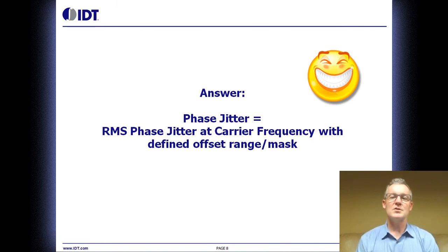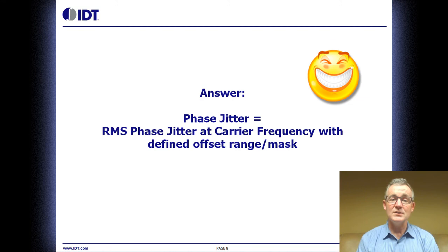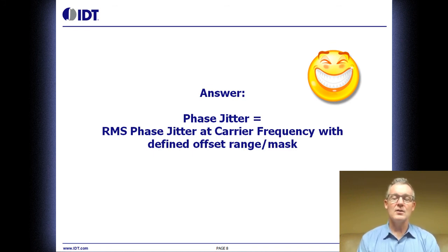So now let's answer the question: what is phase jitter? It's a little complicated, but as you can see, it's not too involved. When people ask about phase jitter, they're asking for the RMS phase jitter. To arrive at RMS phase jitter, you need to know the carrier or operating frequency, and you also need a well-defined offset range or jitter mask so you can integrate the area under the curve in the phase noise plot and get a number specific to the engineer's application.